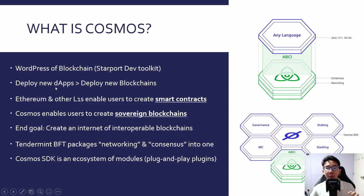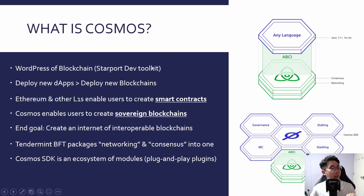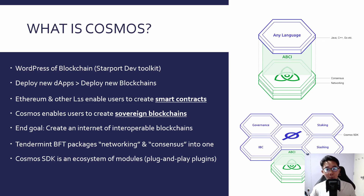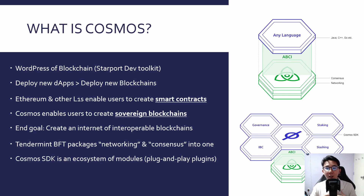Ethereum allows anyone to build applications on top of it by writing smart contract code and pushing it to the Ethereum network — this is already made easy and anybody can do it within minutes. But Cosmos is actually allowing you to deploy new blockchains, not just applications. With an application, you are still using the Ethereum network — you are not a sovereign chain. You are still dependent on Ethereum nodes, validators, and governance. But building and deploying your own blockchain means you are sovereign: you create your own blockchain and define its rules. You are not a tenant living under someone else's roof — you are your own house.